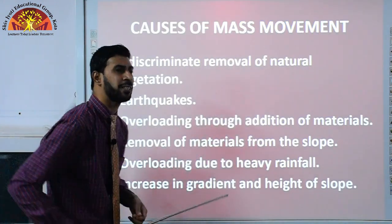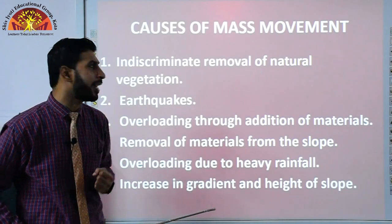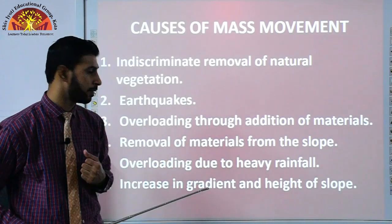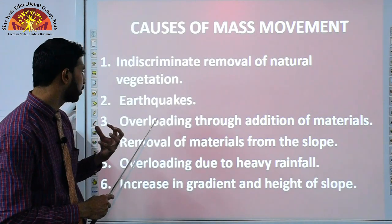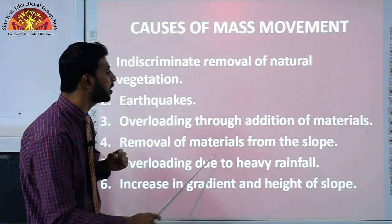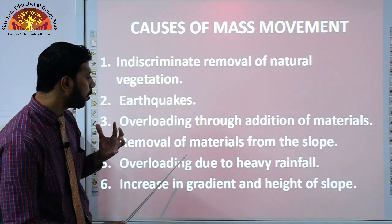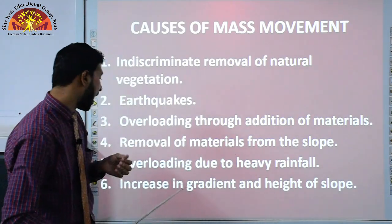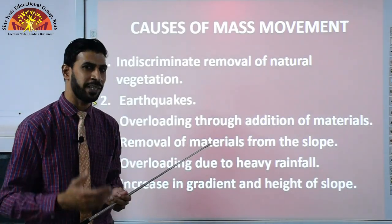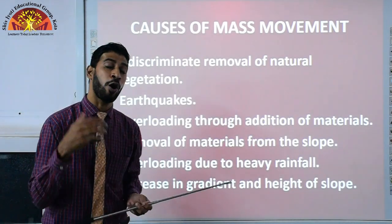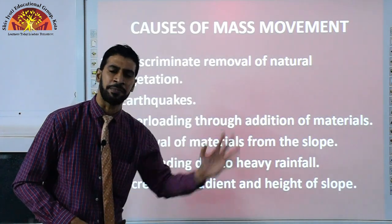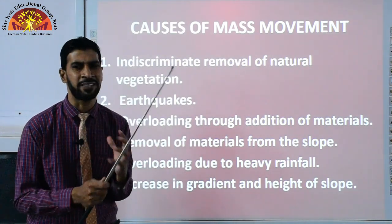The causes of mass movement include indiscriminate removal of natural vegetation, earthquakes, overloading through addition of materials, removal of materials from slopes, overloading due to heavy rainfall, and increase in gradient and height of slopes. When there is heavy rainfall, all the sediments and materials are carried away by the rain water.